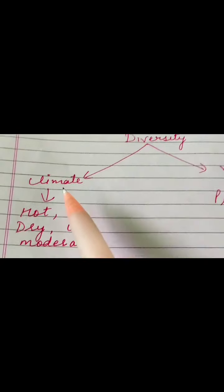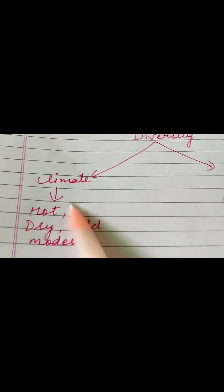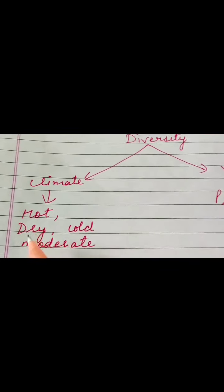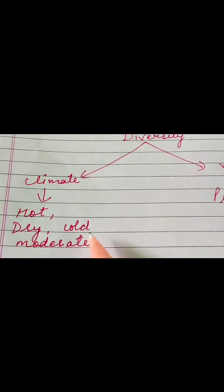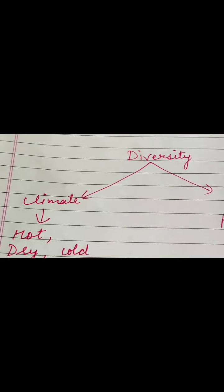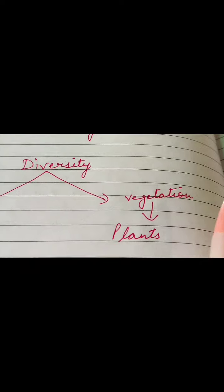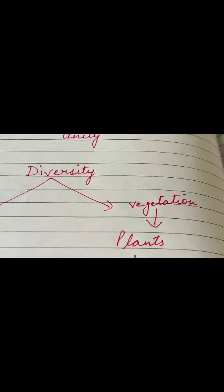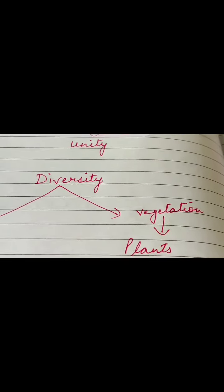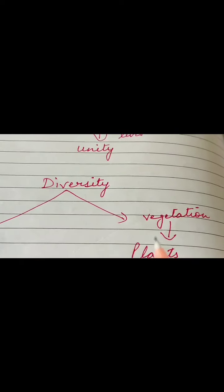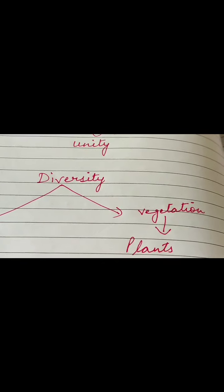Then we are having a diverse climate also. Some places are enjoying hot or dry weather, some cold, and some places are having a moderate climate. Different vegetation is there — different kinds of plants in every part of the country. So this is our diverse culture.